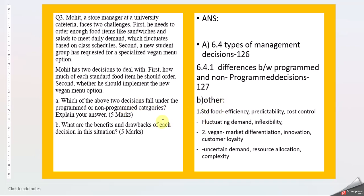Since this is a case study, you don't have a direct answer. I've pointed out certain considerations, but they're not exhaustive. For standard food: efficiency, predictability, cost control, but also fluctuating demand and inflexibility. For vegan menu: market differentiation, innovation, customer loyalty, but also uncertain demand, resource allocation, and complexity. You can add your own points and elaborate on them.